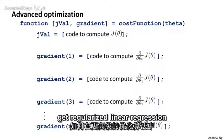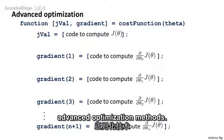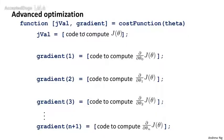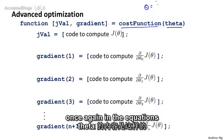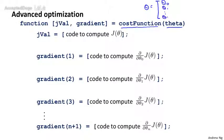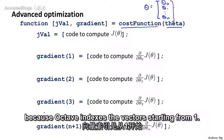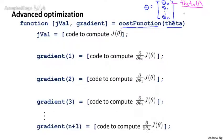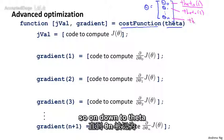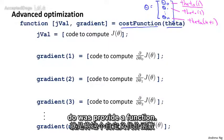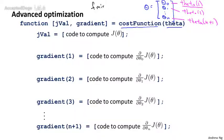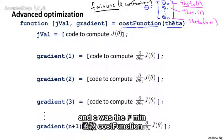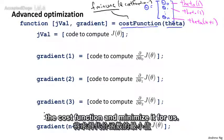Let's talk about how to get regularized linear regression to work using the more advanced optimization methods. And just to remind you, for those methods, what we needed to do was to define a function called the cost function that takes as input the parameter vector θ. And once again, in the equations we've been writing here, we use zero-indexed vectors, so we had θ₀ up to θ_n, but because Octave indexes vectors starting from one, θ₀ is written in Octave as theta(1), θ₁ is written as theta(2), and so on, down to θ_(n+1). What we needed to do was provide a function called cost function that we would pass into fminunc, which was the fmin unconstrained, and fminunc would take the cost function and minimize it for us.